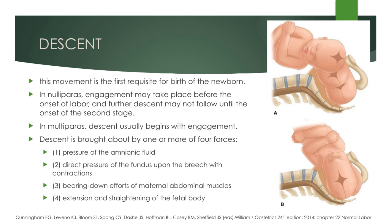The second cardinal movement of labor is descent. This movement is the first requisite for birth of the newborn. In nulliparas, engagement may take place before the onset of labor and further descent may not follow until the onset of the second stage. In multiparas, however, descent usually begins with engagement and overlaps with it. Descent is brought about by one or more of four forces: the pressure of the amniotic fluid, the direct pressure of the fundus upon the breech with contractions, the bearing-down efforts of the maternal abdominal muscles, and the extension and straightening of the fetal body.